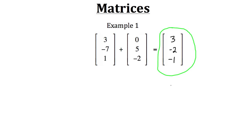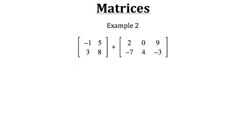Now let's look at example two, another addition problem. Remember, if we want to add matrices together, they have to have the same exact dimensions. With the first matrix, we have two rows and two columns. But the second matrix has two rows and three columns. So we can't add these together. For example two, this would be an operation that we can't do.